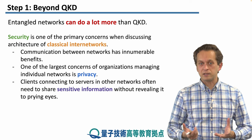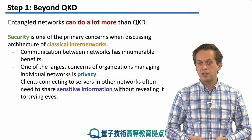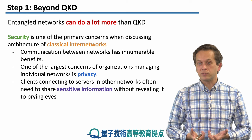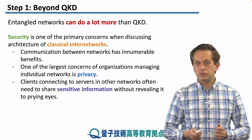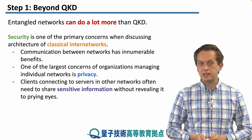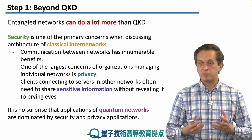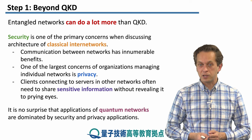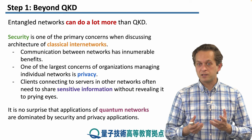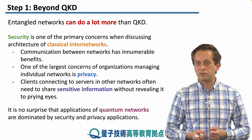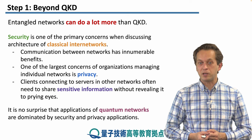Clients connecting to servers in other networks often need to share sensitive information, and clearly they don't want to reveal this information to prying eyes. Because of this large emphasis on security in classical networks, lots of discussion has been dedicated to security and privacy applications in quantum networks as well. We will see that this is a natural consequence of the fact that entanglement has some amazing properties which we can make use of.